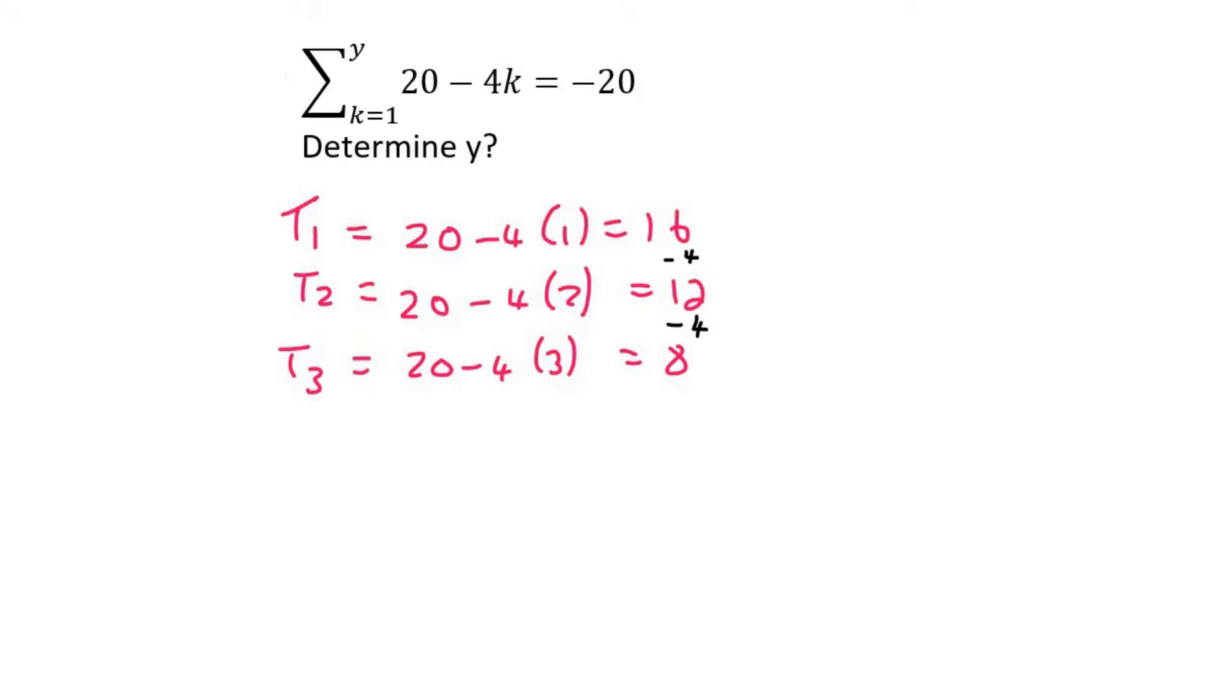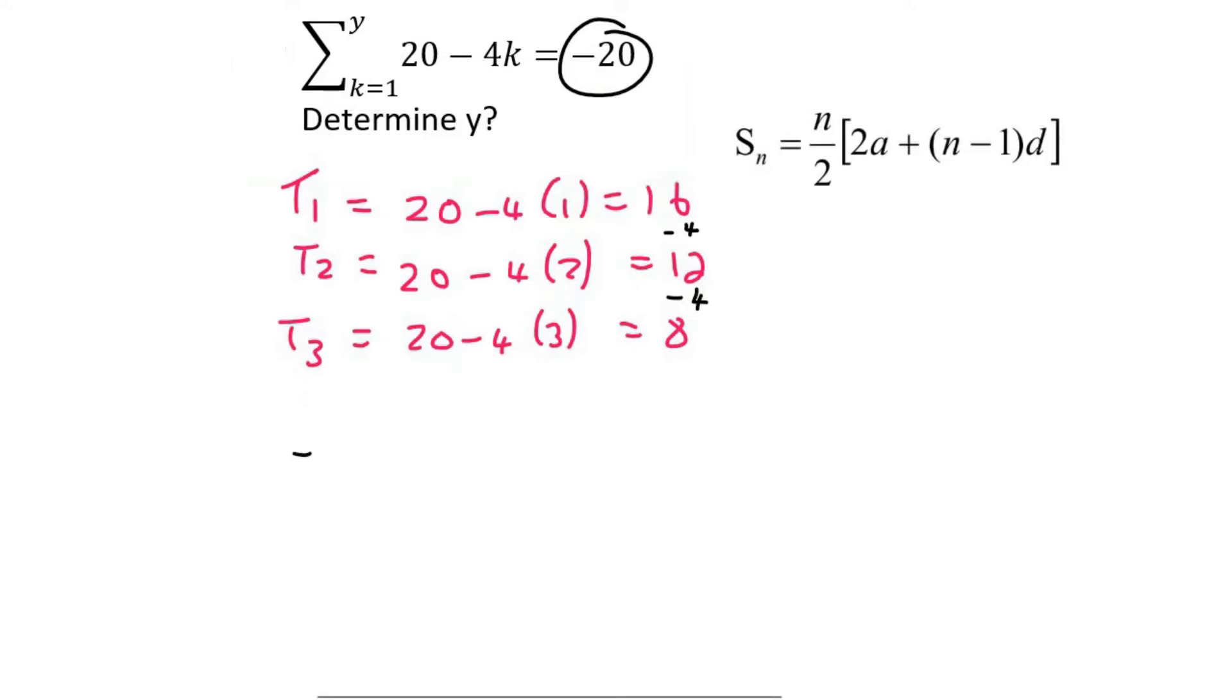Now they are telling us that the sum is equal to minus 20, and we know it's arithmetic. So then we can fill in the sum as minus 20. I'm using this formula now.